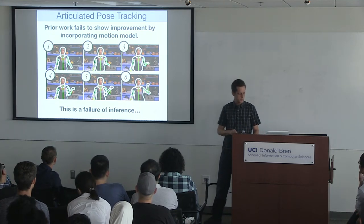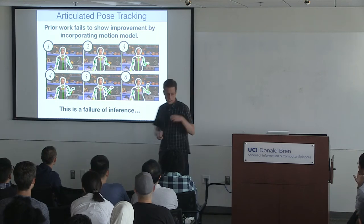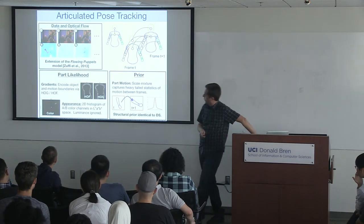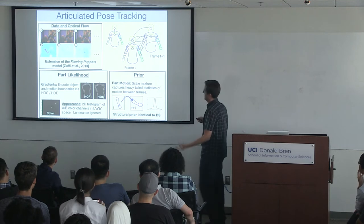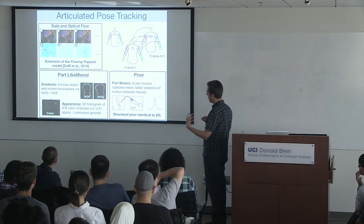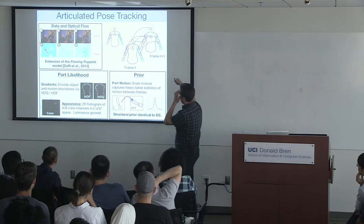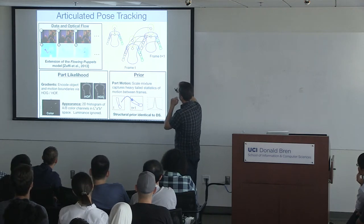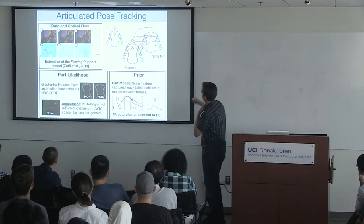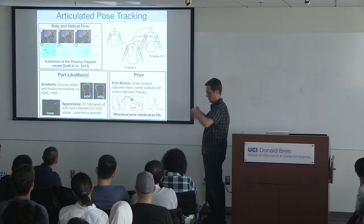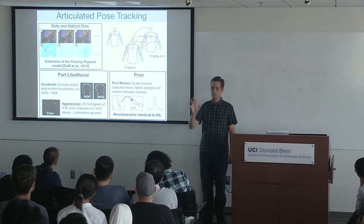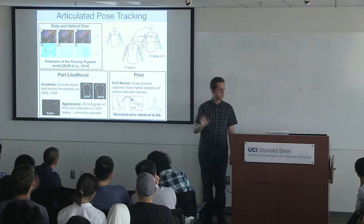Now I want to move to tracking poses of people over time, using a generalization of the model I described. Since tracking is over time, we have many copies of the person — where they are at frames 1, 2, 3, 4, 5 — with a tree within each time point encoding body constraints, plus edges over time encoding the fact that in one thirtieth of a second a person can only move so fast. Because of these temporal edges, the graph now has cycles.